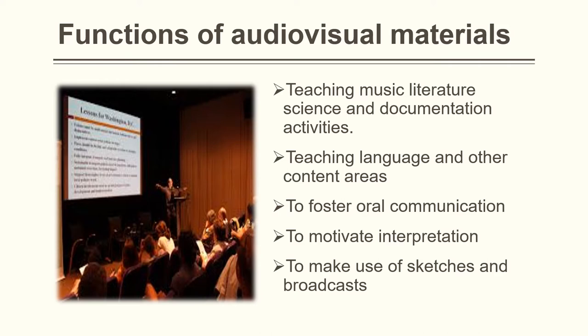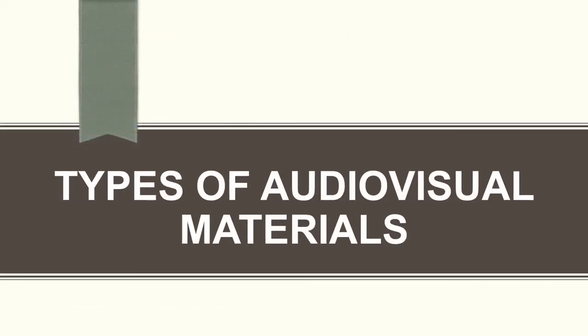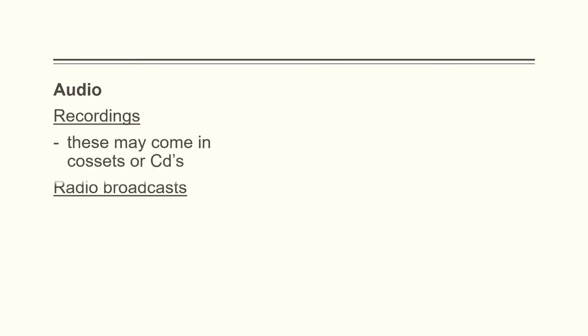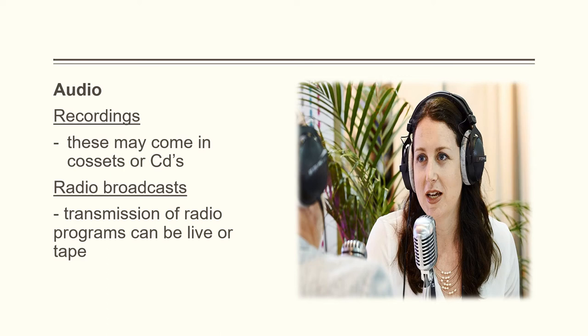Next, we have the types of audiovisual materials. Under audio, we have recordings, which may come as infosets or CDs, and radio broadcasts, which are transmissions of radio programs that can be live or taped.